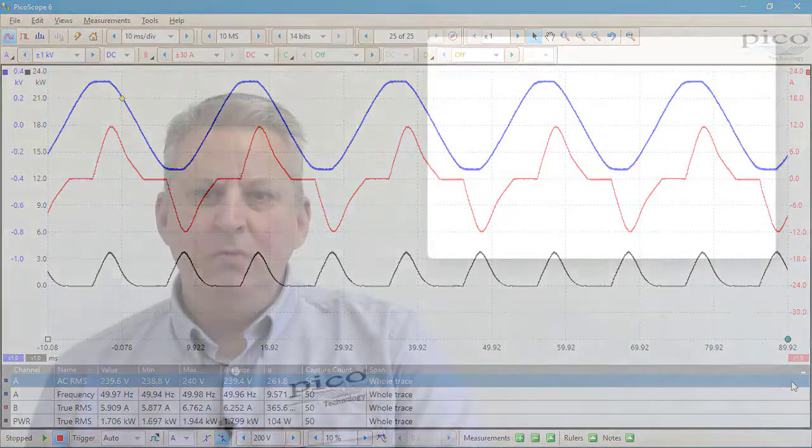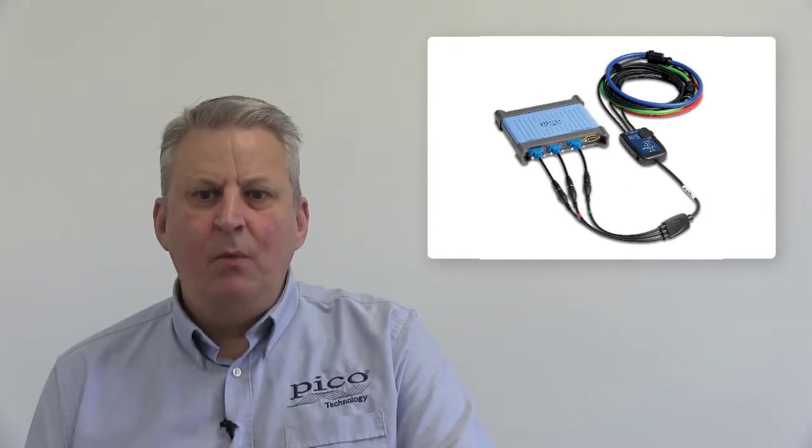There are two new D9 to BNC adapters, one single and one dual and these increase the range of accessories that can be used. For example, two new flex type current probes for single and three-phase mains applications.